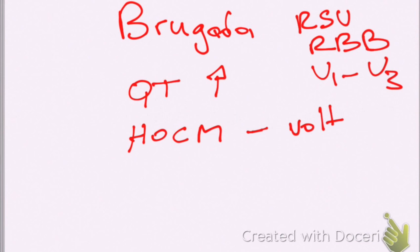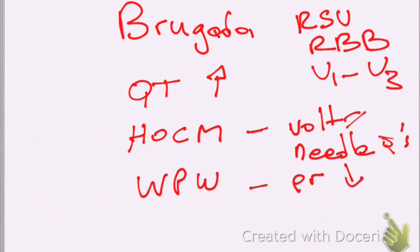Big volts, big volts, and the needle Q's. And then you're going to think about WPW with the PR that's short and the slurred upstroke of the QRS.